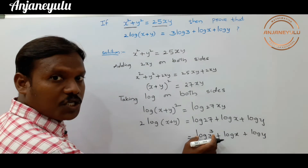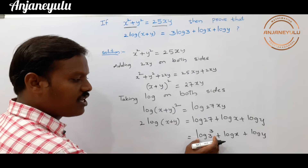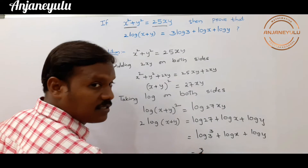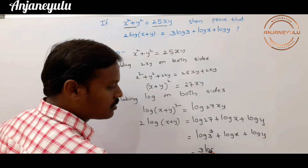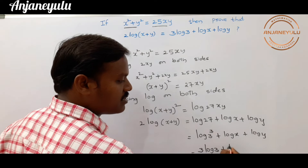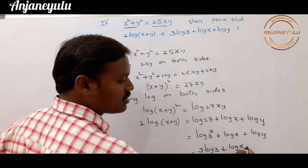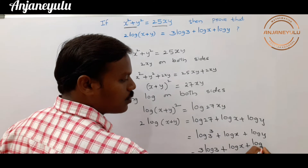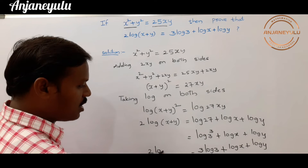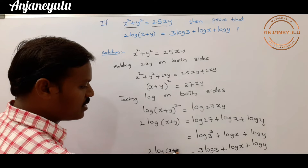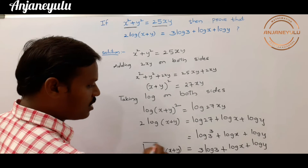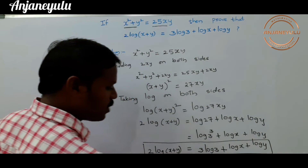So we have log 3³ plus log x plus log y. Here we can use the power rule again: log 3³ equals 3 log 3. Therefore, 2 log(x + y) equals 3 log 3 plus log x plus log y. This is our required result.